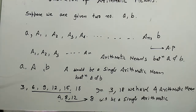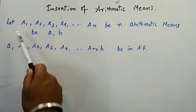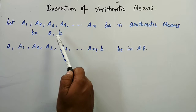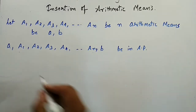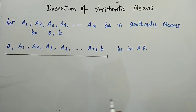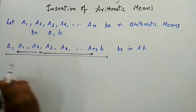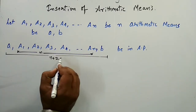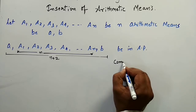Now we are going to see how we can insert n arithmetic means between any two given numbers. Let a1, a2, a3, a4 up to an be the arithmetic means which we are going to insert between a and b. If these are the arithmetic means between a and b, then this sequence will be in AP. We have inserted n arithmetic means between a and b, and the total number of terms in this arithmetic progression will be equal to n plus 2.